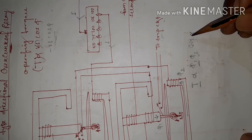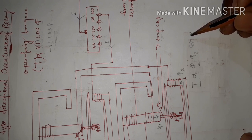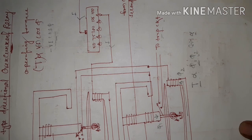The circuit breaker is able to operate by the help of the trip coil, and the faulty section is separated from the healthy section.